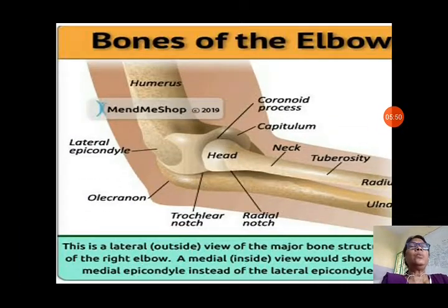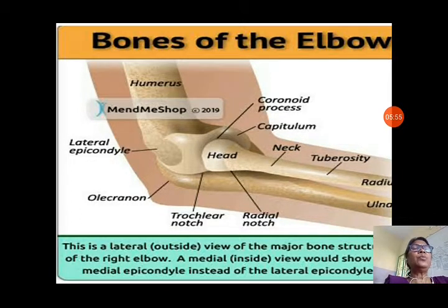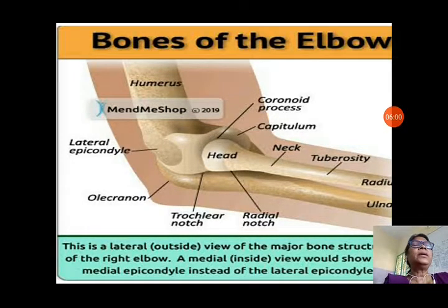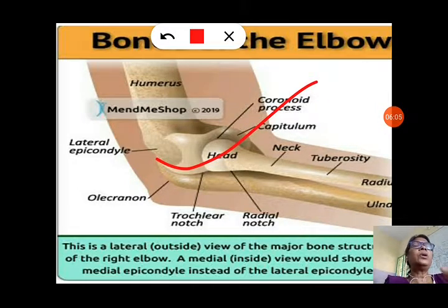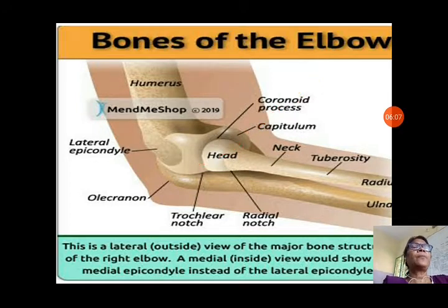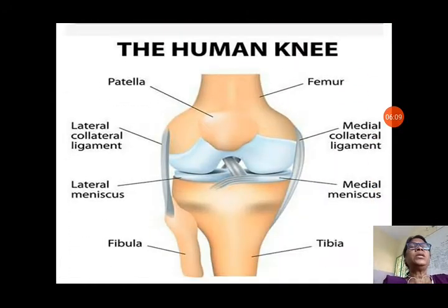You can see the bones of the elbow shown here — this is the lateral outside view of the major bone structure of the right elbow, showing how it is joined as a hinge joint. In this joint you can only move in one direction; you cannot fold your elbow backwards. Similarly, in the human knee you can see there is a hinge joint, and you can fold your knee in one direction only.